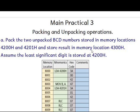Hello everyone, welcome to the microprocessor practical series. Today we'll be doing the practical based on packing and unpacking operations. We are given: pack the two unpacked BCD numbers stored in memory locations 4200h and 4201h, and store the result — the packed number — in memory location 4300h. The least significant digit is at 4200h.